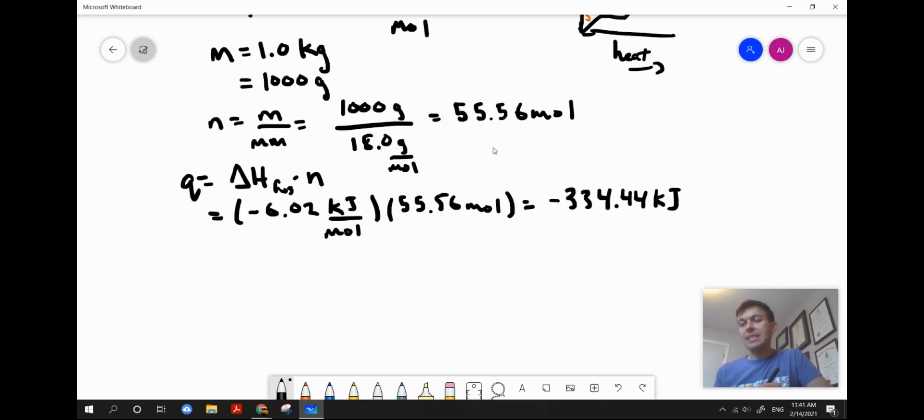So we get an answer as negative 334.44 kilojoules of heat. Now, when we write this in a statement, what we have to do is be careful about this negative sign.